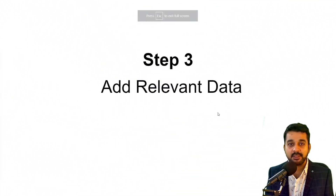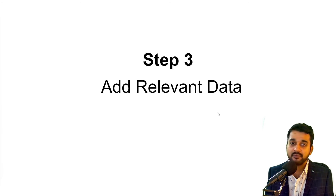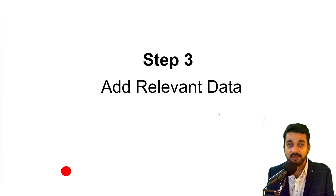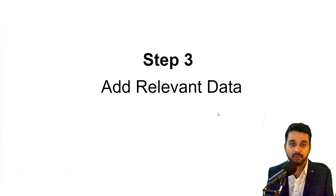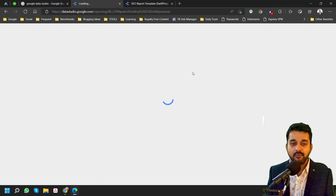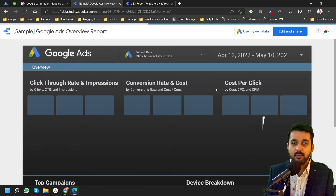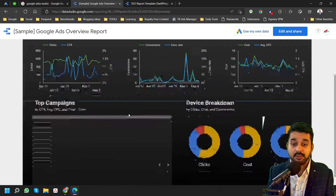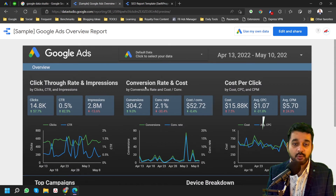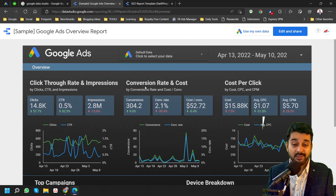The third step is basically adding relevant data. We have added the data source and chosen a report template. Now we need to add data, and the template will automatically convert that data into a wonderful report structure like a dashboard. The template is initially filled with dummy data from Google sources — just to show you how things will look.